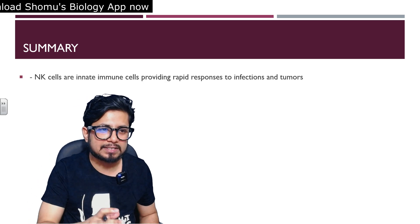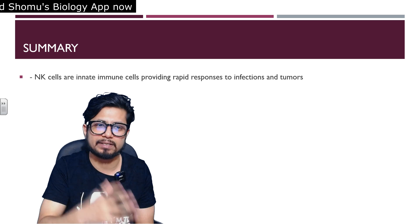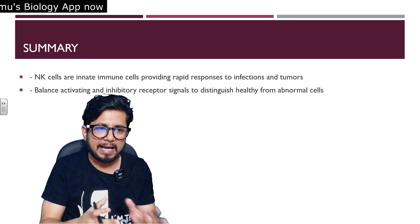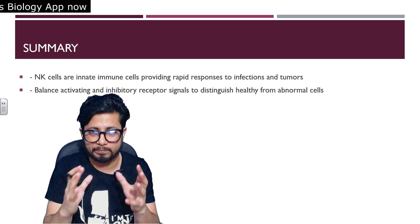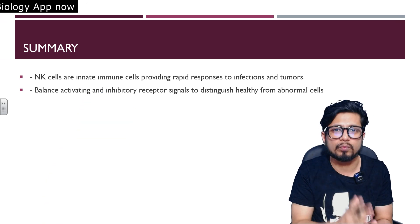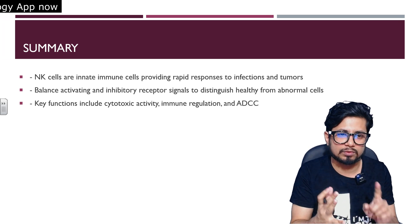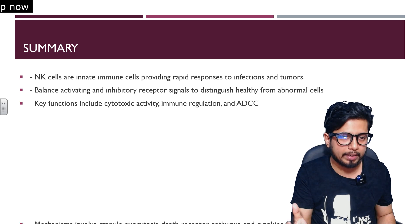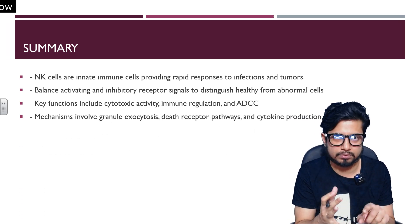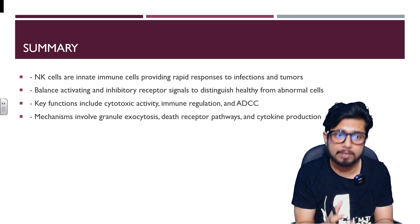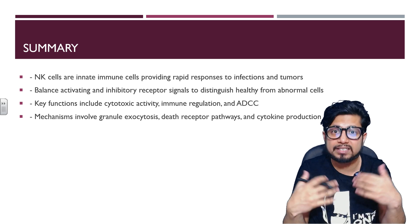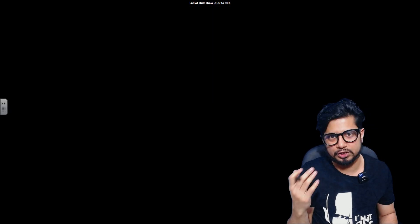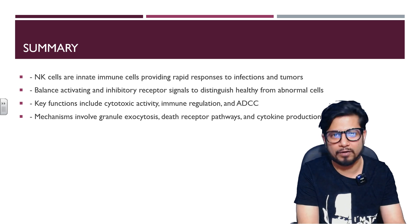In summary, natural killer cells are innate immune cells that provide rapid response against infections, tumors, and stressed cells. A balance of activating and inhibitory receptors is essential for determining which cells to kill and which to spare. Key functions include cytotoxic activity, immune regulation via cytokine release, and ADCC. The mechanisms involve granule exocytosis (perforins and granzymes), the death receptor pathway (FasL/TRAIL — the extrinsic apoptosis pathway), and cytokine production.